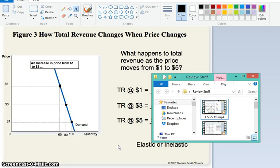After you left last time, you were supposed to go and figure out the total revenues at $1, $3, and $5, and then think about whether this represents an elastic or an inelastic relationship between price and quantity demanded.